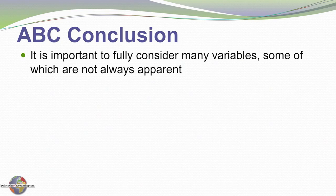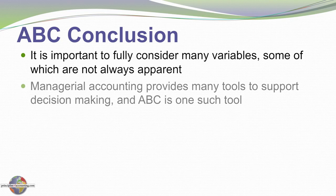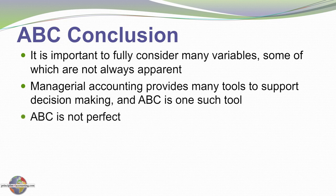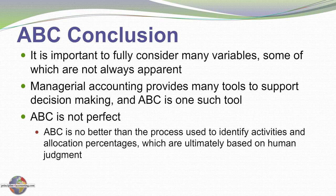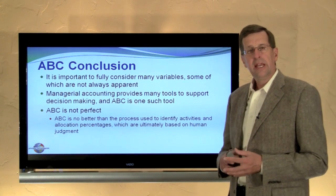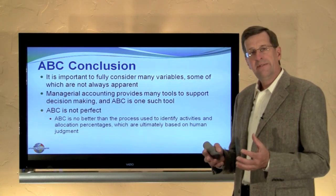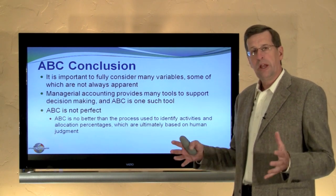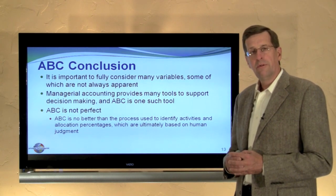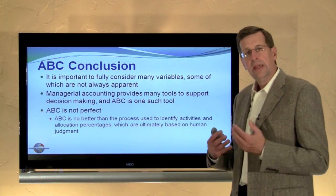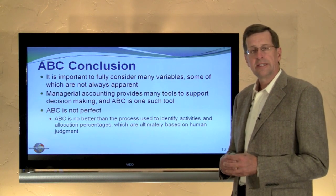In concluding on activity-based costing, it is important to fully consider many variables, some of which are not always apparent. Managerial accounting provides many tools to support decision-making, and ABC is one such tool. However, ABC is no better than the process used to identify activities and allocation percentages, which are ultimately based on human judgment. That spreadsheet was full of allocations and decisions — hopefully sound ones that lead to better decision-making.